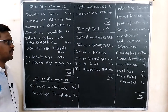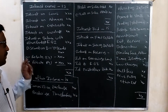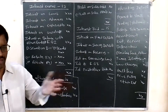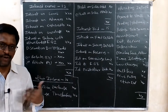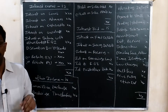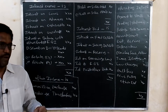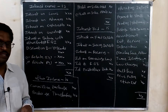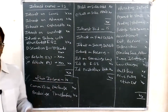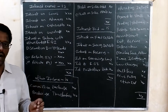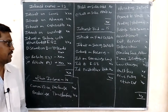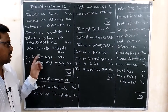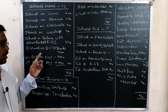Interest on balance with other banks and Reserve Bank of India: if the bank has a short-call notice balance, it earns interest. Similarly, interest is earned on balances held with the Reserve Bank of India and with other banks. Next is discount on bills discounted.